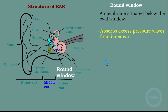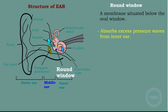The next part is the round window. The round window is a membrane situated below the oval window. The oval window is the membrane separating the inner ear and the middle ear. The function of the round window is to absorb excess pressure waves from the inner ear. Inside the cochlea there is a liquid called endolymph which vibrates, and if the pressure becomes too much, the round window absorbs that excess pressure.